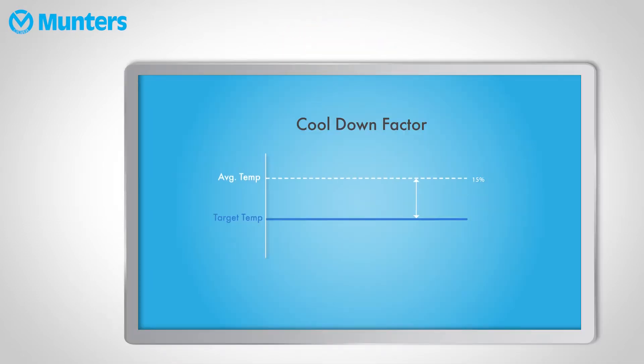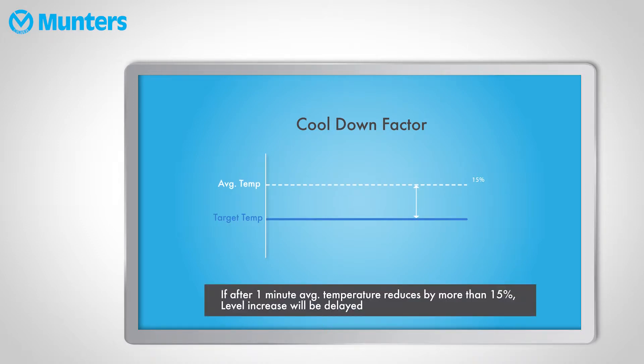The default for the cooldown factor is 15%. Above target temperature, the controller increases levels to cool down the house. But what if the temperature is already decreasing towards target? If the temperature is decreasing by 15% of the distance between the current temperature and the target in one minute, the controller will delay the increase of levels. The default for the cooldown factor is quite good, but if you have situations where in the evening the temperature reduces very rapidly and you see an overshoot where temperatures go below target before adjusting back, then you should consider reducing this parameter to 12% or 10%.